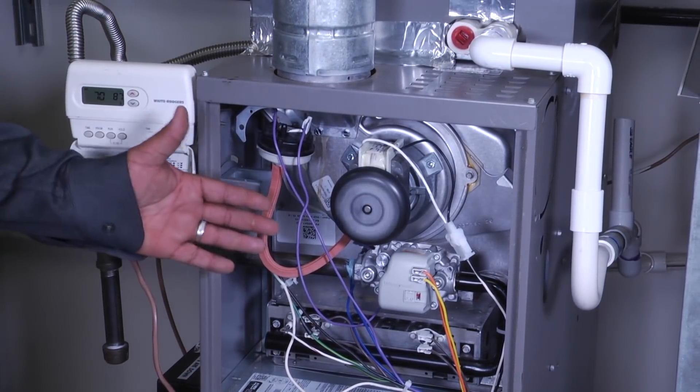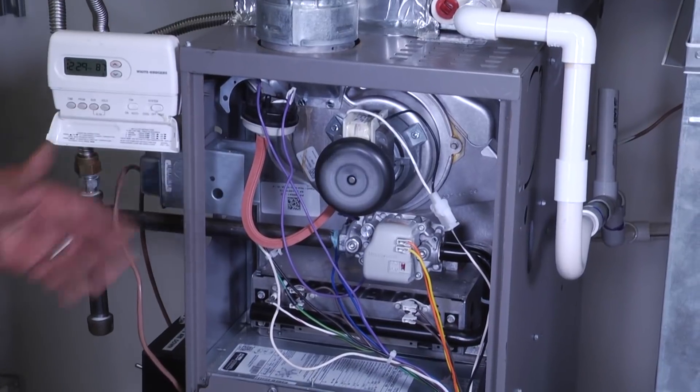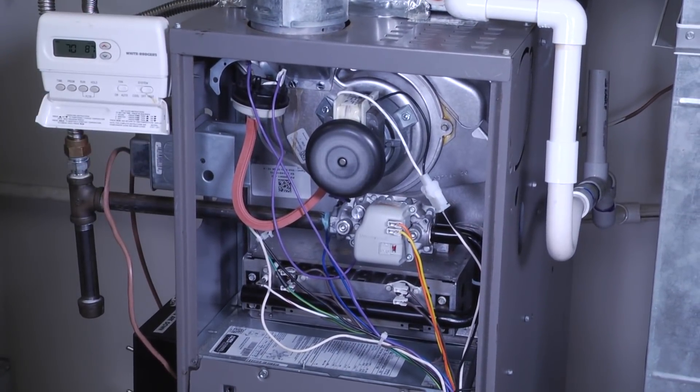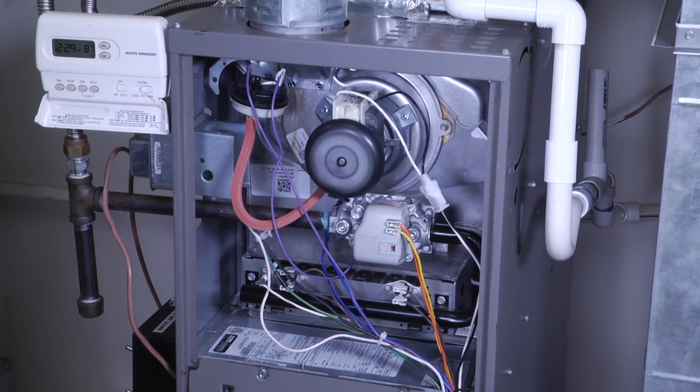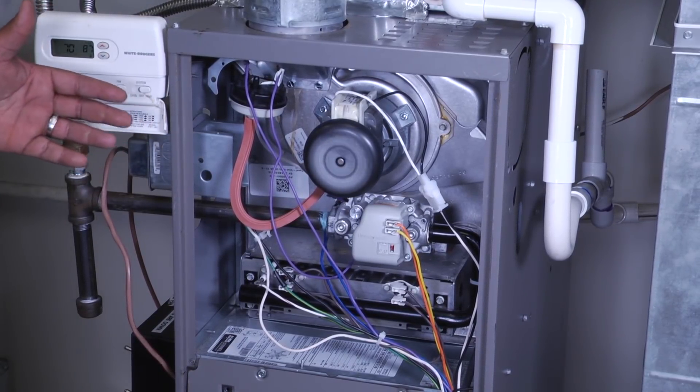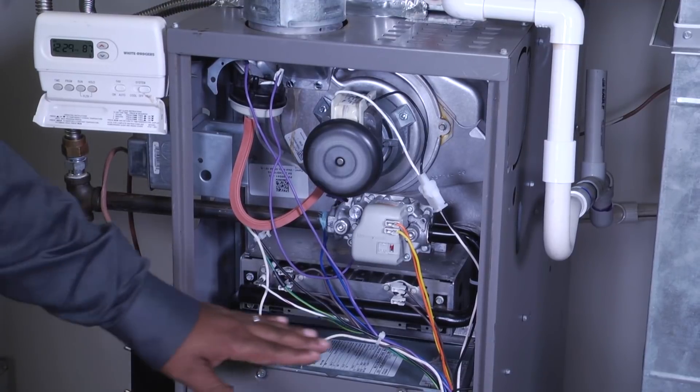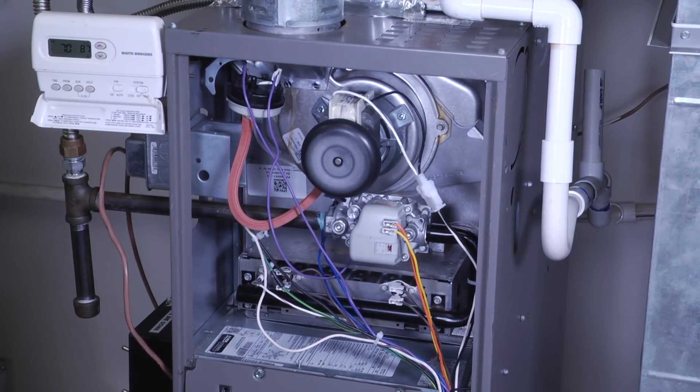So there's our inducer motor. Our inducer motor starts. Once our inducer motor starts, our pressure switch is going to say okay, my inducer motor is running, I'm good to go, there's no cracks or leaks anywhere. And then shortly after that, we're going to get a glow inside our burner housing down here from our hot surface igniter.